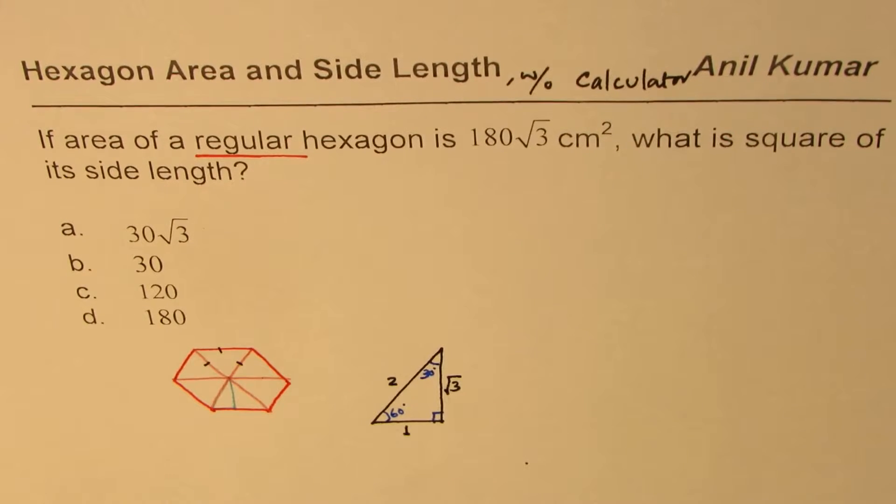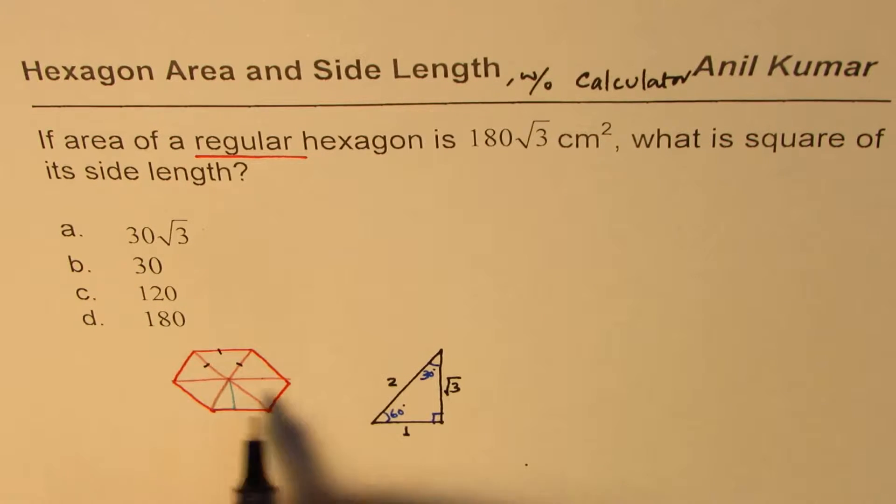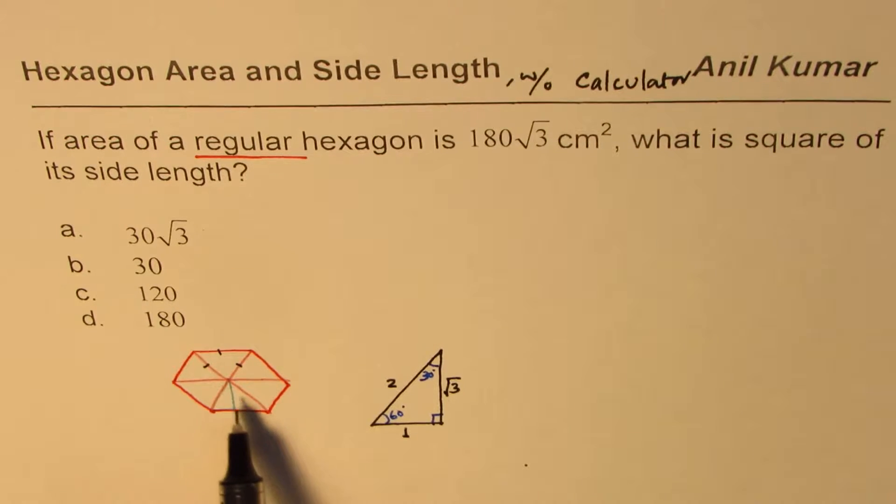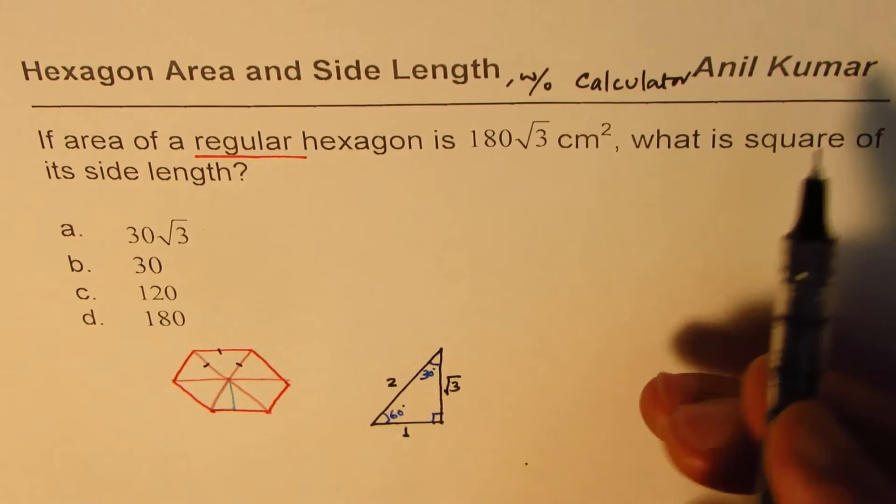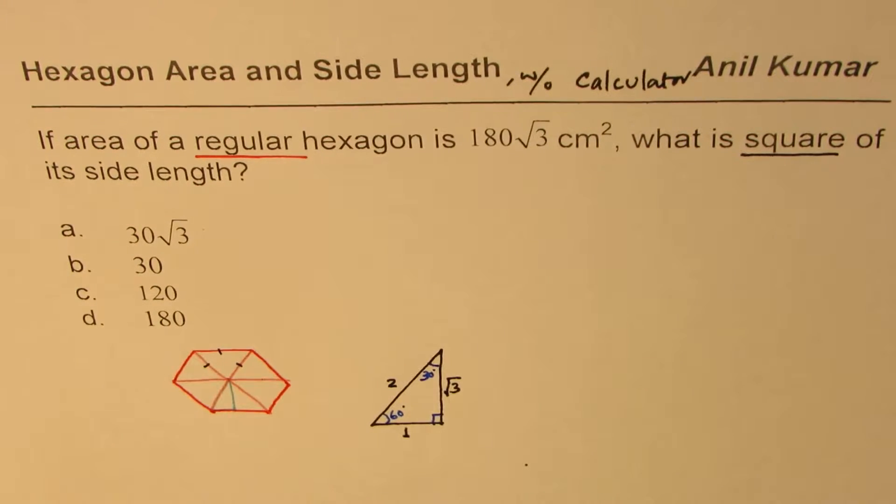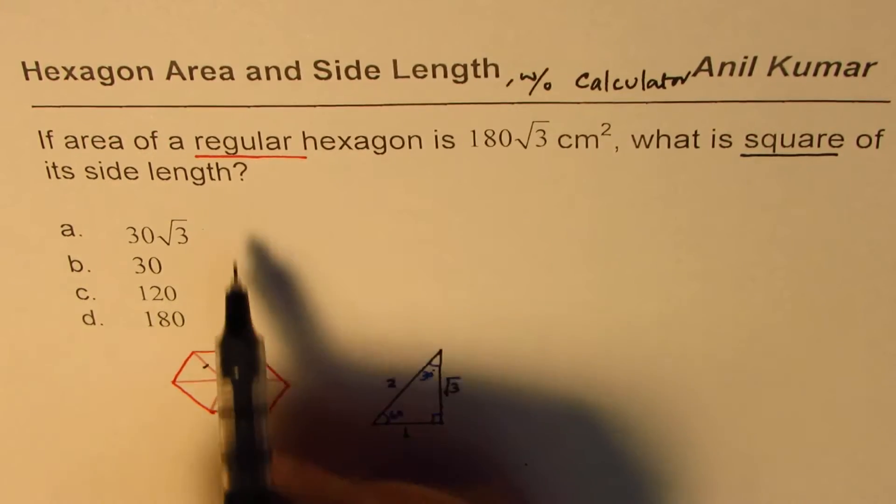So let's understand how to solve this. In our case we want to find area of each triangle. Once you find triangle area, you can find the side length. And then the question is what is square of side length, not just the side length. So remember that part.